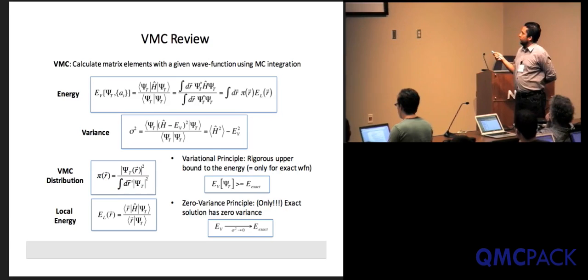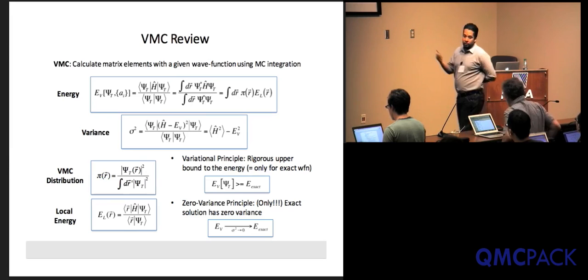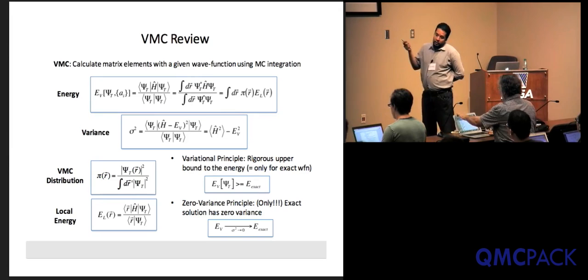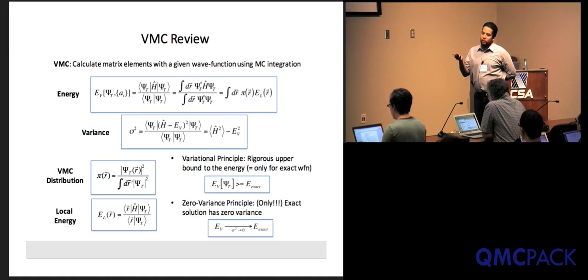The local energy is the matrix element of the Hamiltonian between the trial wave function and a vector in position space. R is a 3N-dimensional vector — 3 coordinates per electron — so this becomes a 3N-dimensional integral, and we just do straightforward Monte Carlo integration on it. As the dimension of the integral becomes bigger, Monte Carlo becomes by far the most efficient way to perform these integrals. Beyond about six dimensions, stochastic methods become the way to perform integration more efficiently.